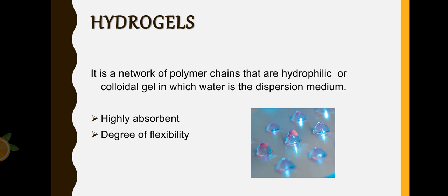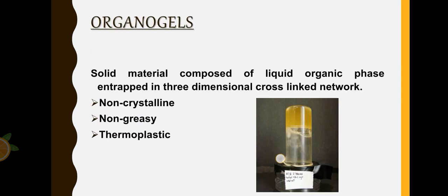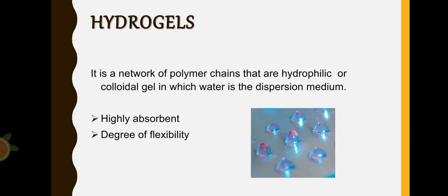Second type we have is hydrogels. In this we have a network of polymer chains that are hydrophilic or colloidal gel in which water is the dispersion medium. These gels are highly absorbent and they have a degree of flexibility. So hydrogels consist of hydrophilic chains in an aqueous medium, while organogels have a liquid organic phase entrapped in a three-dimensional network.